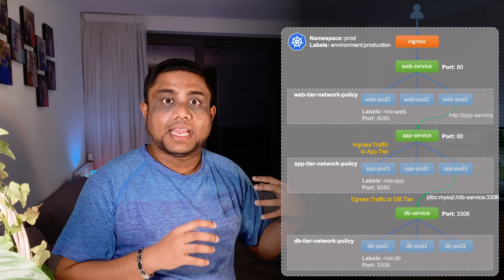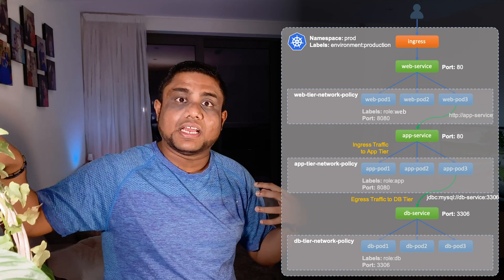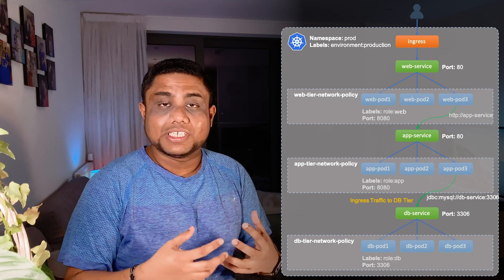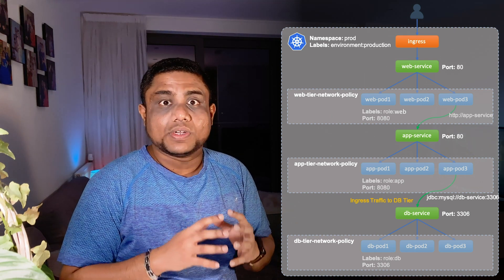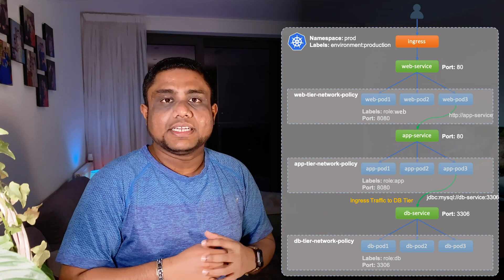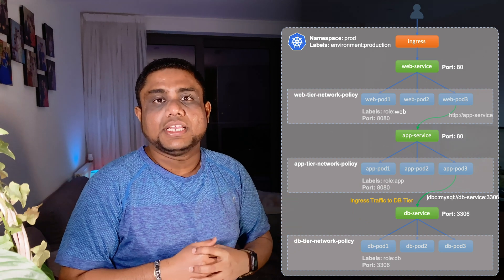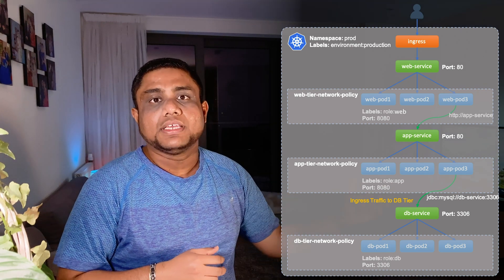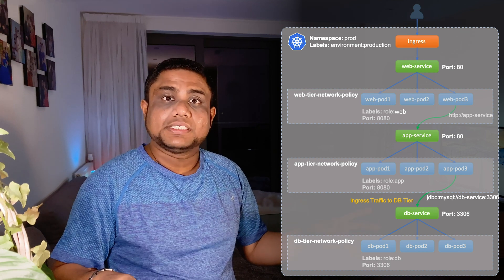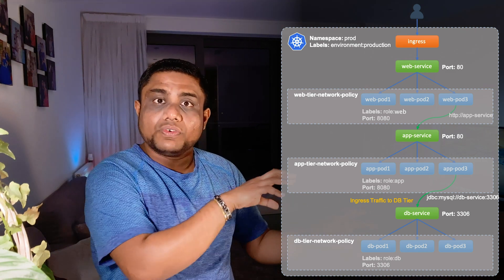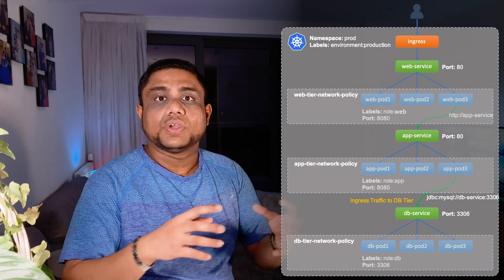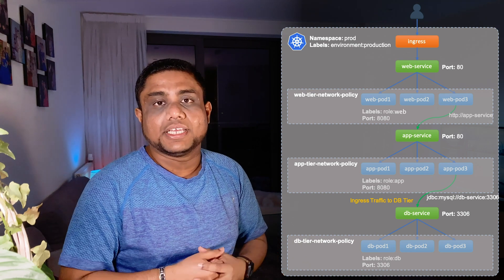If you are creating a network policy for the app tier, the web tier can send traffic into the app tier, and the app tier can send egress traffic into the database. For the database network policy, the database will be accessed only by the app tier pods, limiting ingress traffic into the database pods from the app tier pods. With these web, app, and database tier network policies defined, you have full control of who can connect to what services and the required networking security in place.